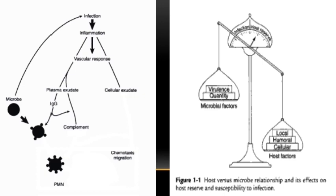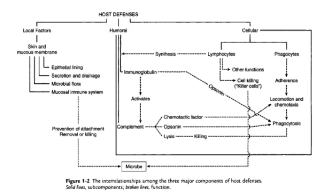Infection can provoke inflammation, hyperemia, and a vascular response which leads to plasma exudate containing immunoglobulins and complement. Chemotaxis signaling attracts cells like polymorphonuclear leukocytes and phagocytes to combat bacteria. Host defenses include local factors — skin and mucous membrane, secretions and drainage, microbial flora, and the mucosal immune system — as well as humoral defenses through immunoglobulins activating the complement system, and cellular components including lymphocytes and phagocytes.